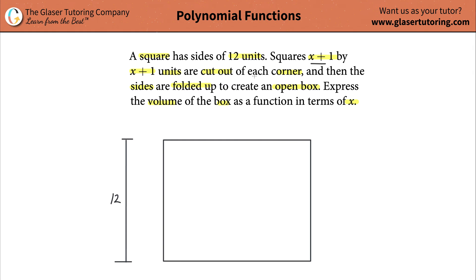A square has sides of 12 units. You draw that, you represent it, you think about it. Then squares of x plus 1 by x plus 1 units are cut out of each corner. I know the second sentence now might seem difficult, but again, take your time.